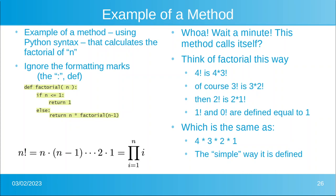Here's an example of a method using Python syntax. Basically it says: factorial of n — if n is less than or equal to 1, return the number 1; else, return n times factorial of n minus 1. So this is a method that calls itself. You could think of factorial as 4 times 3 times 2 times 1, or you can think of it as 4 times 3 factorial. Of course, 3 factorial equals 3 times 2 factorial, and so on.